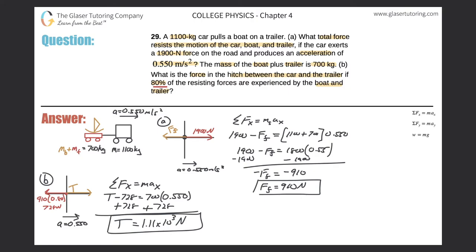Now for the second method, for those who are curious. I'll detail both the boat-and-trailer and the car separately with their own free body diagrams. For the boat and trailer: there's still the 728-newton resistive force pointing left, and the tension force pointing right.